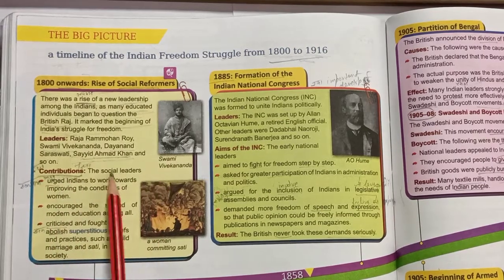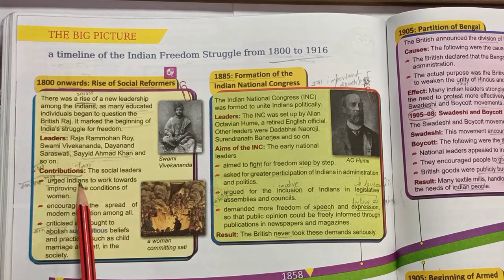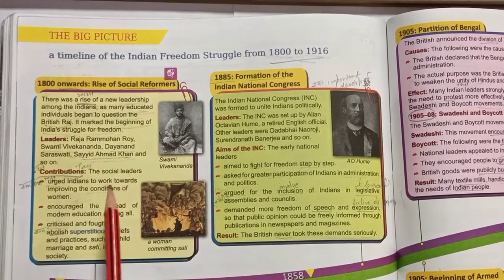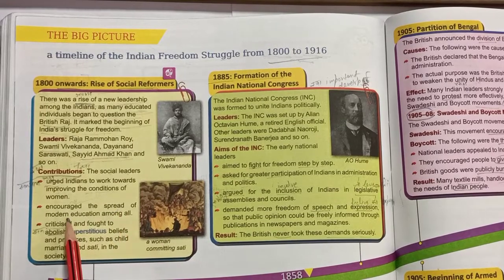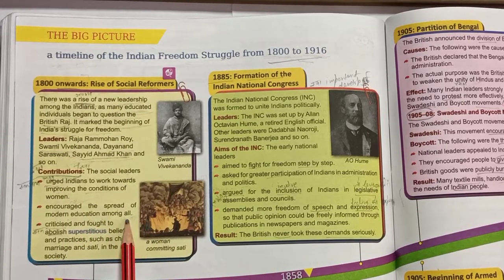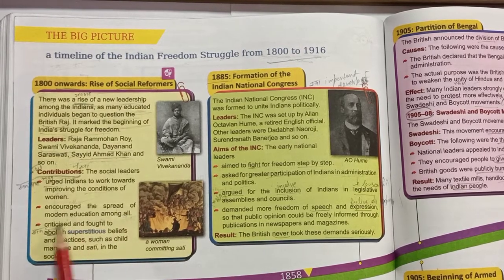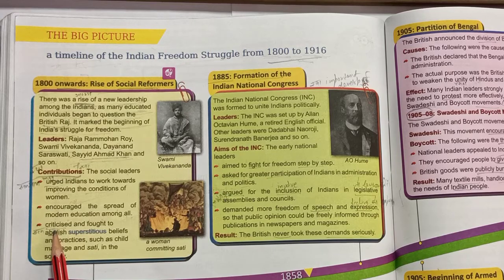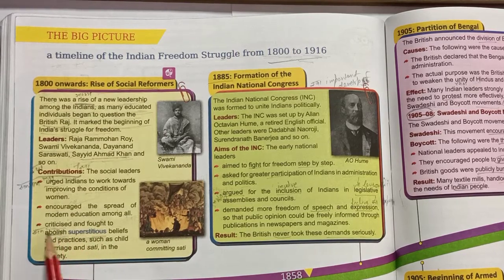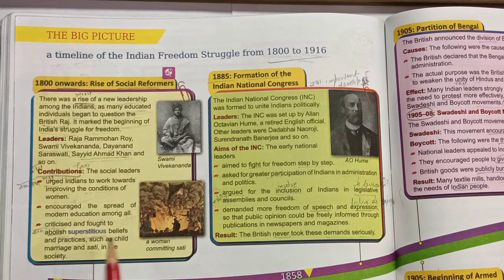What did the social leaders contribute? The social leaders urged Indians to work towards improving the condition of women. They encouraged the spread of modern education among all, so that people could understand right and wrong and know what the British rule meant. They also criticized and fought to abolish superstition and harmful beliefs and practices such as child marriage and sati.